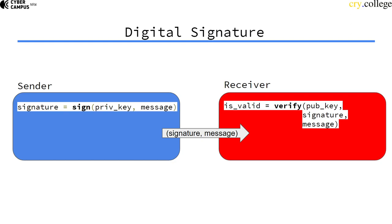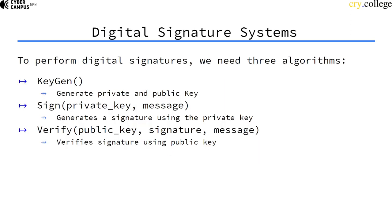On a high level, digital signature systems work like this: you have two functions. You have a sign function that uses the private key to sign a message and outputs a signature. You always use the private key to sign something, and then the signature is sent together with the message to the receiver. The receiver, if they have your public key, can then use a verify function with your public key, the signature, and the message, and check if the signature is valid. If the signature is valid, you can be absolutely sure that the message was actually signed by you.